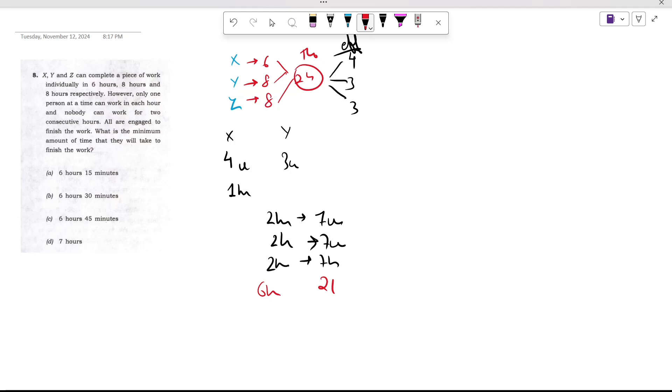Now we only need 3 units. So now X would come and do 4 units, but we only need 3 units, so he'll work one-fourth of the hour, that is 45 minutes. So the time taken would be 6 hours and 45 minutes. The answer for this question is option C.